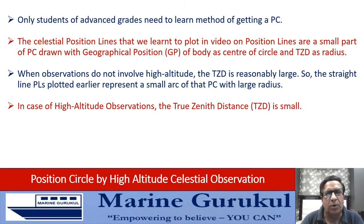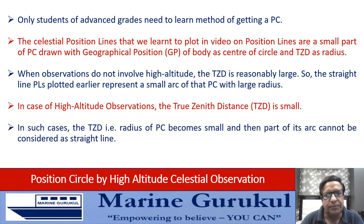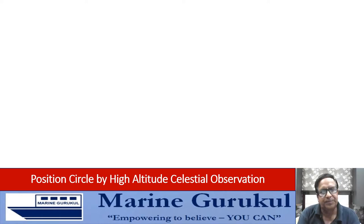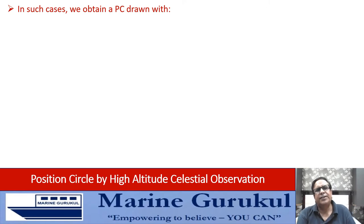In case of high altitude observations, the TZD, or true zenith distance, becomes small. In such cases the TZD, which is the radius of the position circle, becomes small, and then a part of that arc cannot be considered as a straight line. In such cases we obtain a position circle.